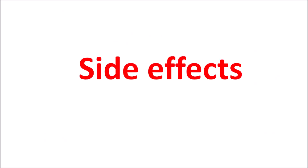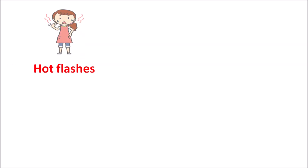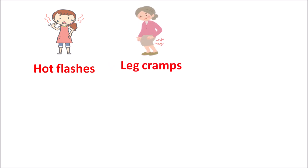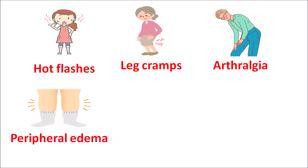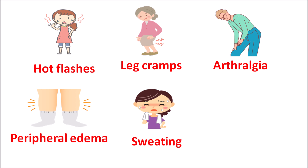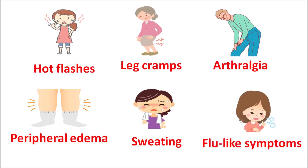Now let us see the side effects of Raloxifene. This drug produces hot flashes, which are commonly observed with many hormonal supplements. It can produce leg cramps and arthralgia — joint pain. It can also produce peripheral edema — swelling of legs. Excessive sweating can be observed due to estrogenic activity. It can also produce flu-like symptoms resulting in rhinitis and sinusitis. All these side effects are observed with Raloxifene.